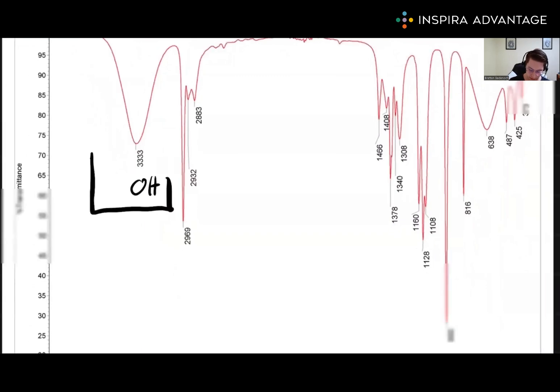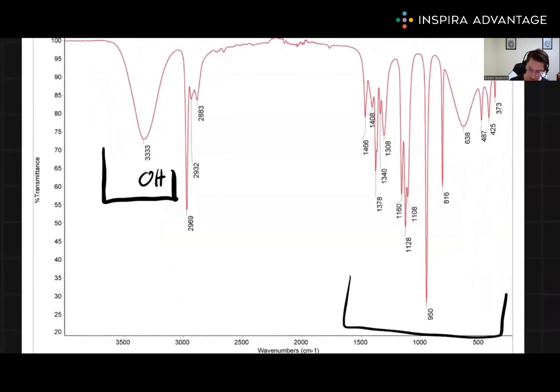It's not worth trying to distinguish them based on everything below the 2,000 as it just gets quite noisy down here. All you need to know for an alcohol, especially for the MCAT, is that it's going to give you a big, broad peak up around the 3,500 mark, but it does look distinct from a carboxylic acid.